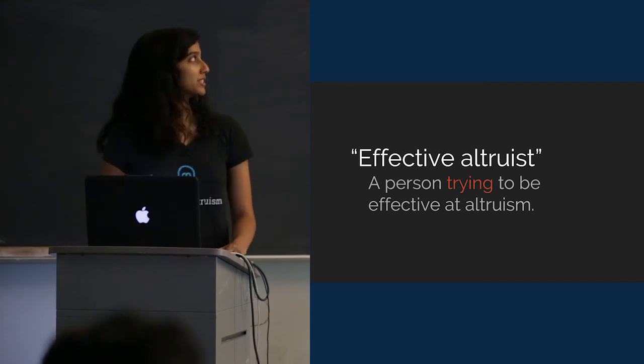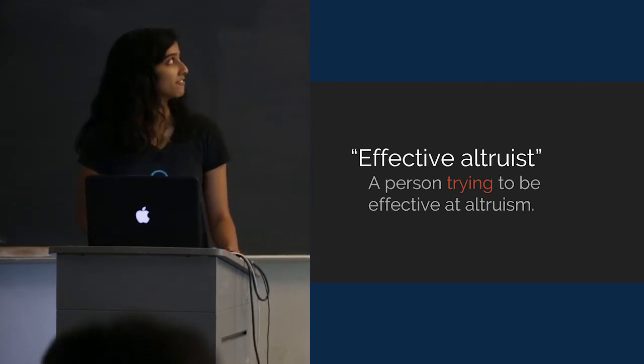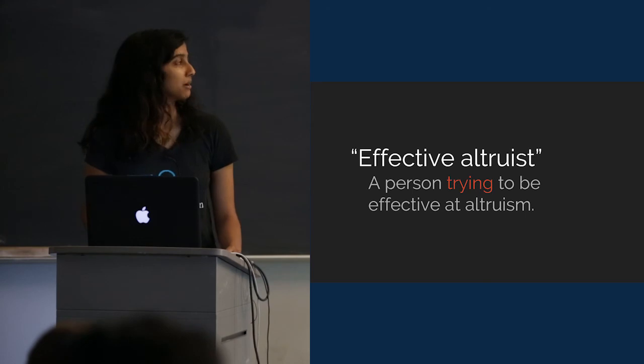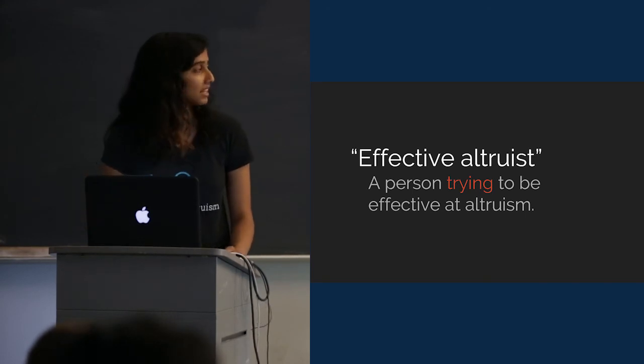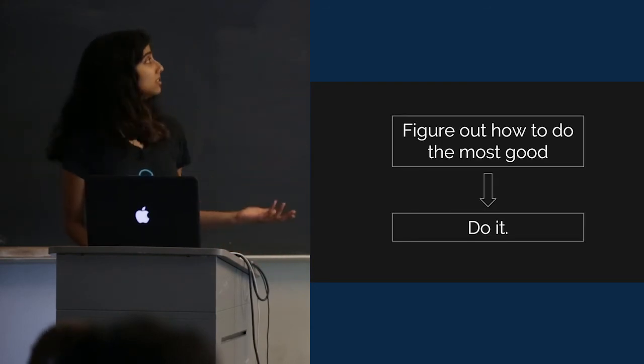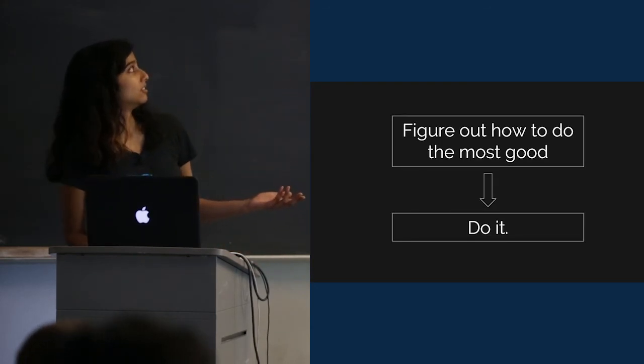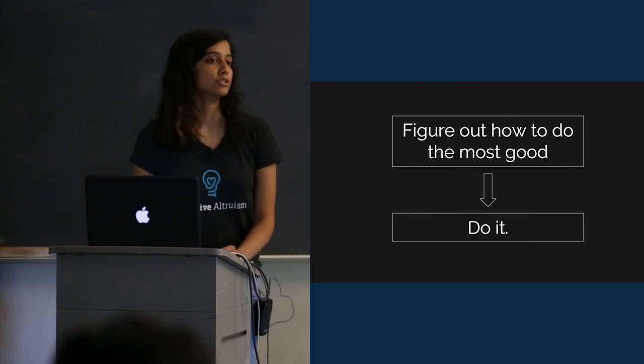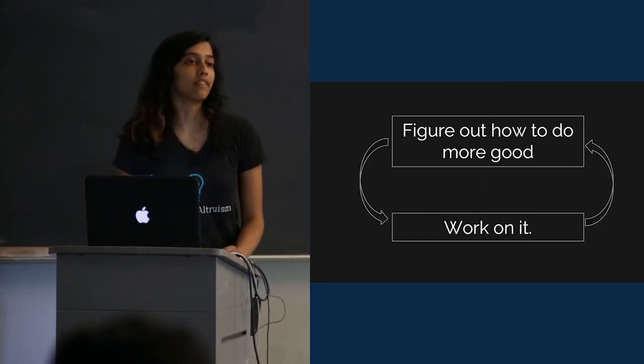Let me tell you a little secret. I say that I'm an effective altruist. That just means a person trying to be effective at altruism. This is the ideal. You figure out how to do the most good and then you do it. But in reality, you figure out how to do a little more good than you're doing today, and then you work on that.